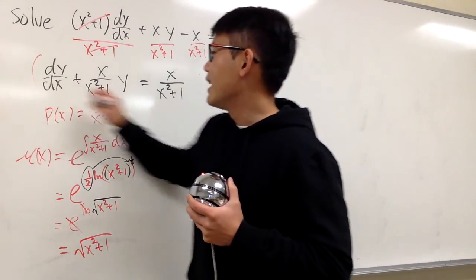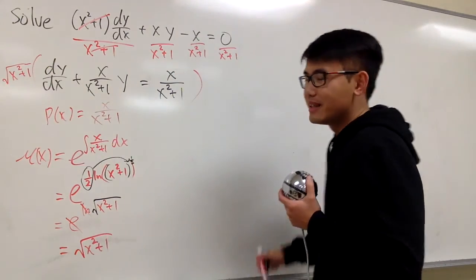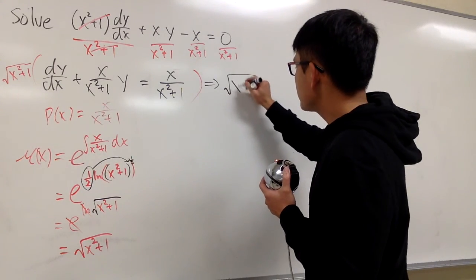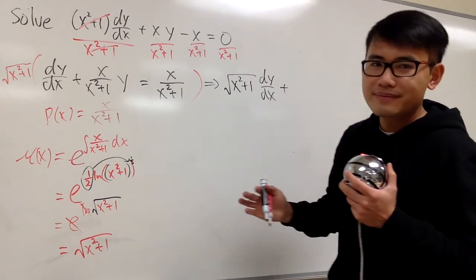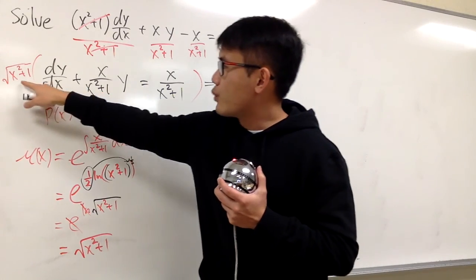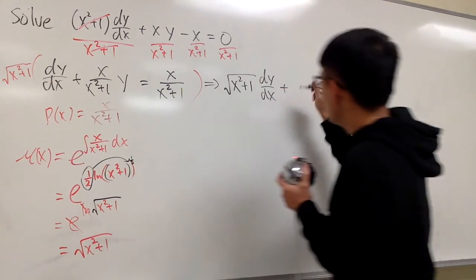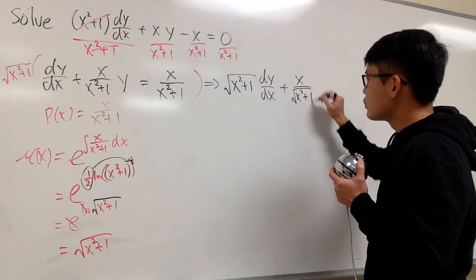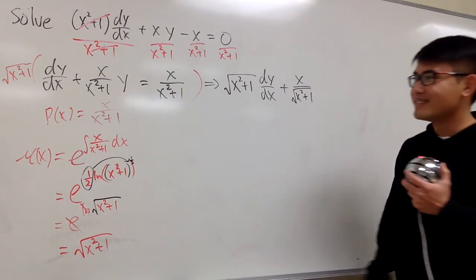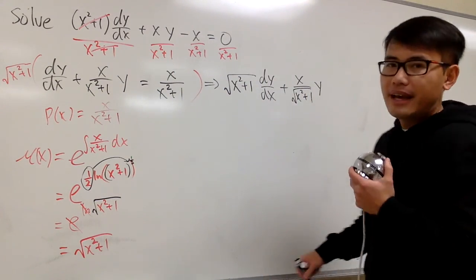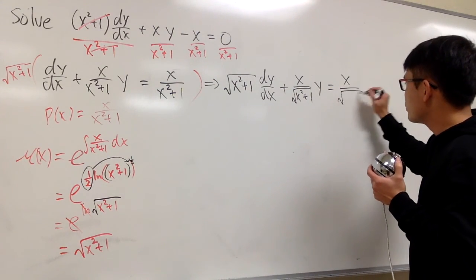We multiply everything by the integrating factor, square root of x squared plus 1. The first term becomes square root of x squared plus 1 times dy/dx. For the second term, we multiply square root of x squared plus 1 by x over x squared plus 1 — the insides are the same, so we just get x over the square root of x squared plus 1 times y. The right-hand side likewise becomes x over square root of x squared plus 1.